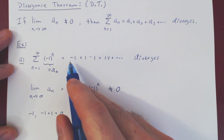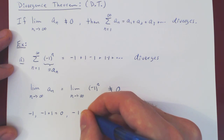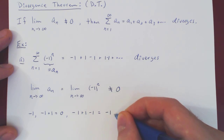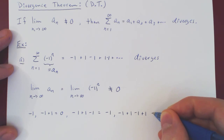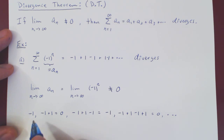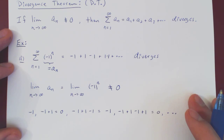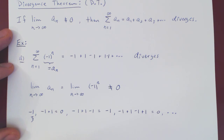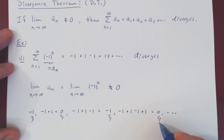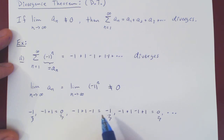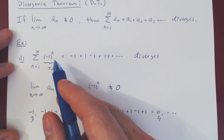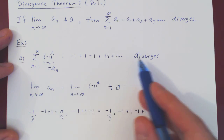Summing the first three terms gives negative 1 plus 1 minus 1, which equals negative 1. Summing the first four terms gives negative 1 plus 1 minus 1 plus 1, which equals 0, and so forth. The sequence of partial sums gives you negative 1, then 0, then negative 1, then 0. So this sum oscillates forever between negative 1 and 0, and clearly the total does not converge to a fixed real value. But this was even simpler as a direct consequence of the divergence theorem.